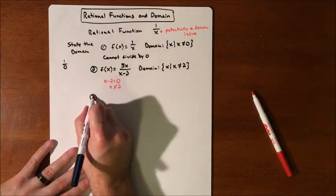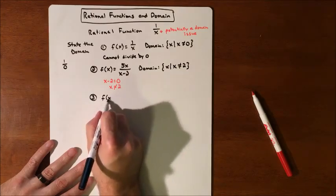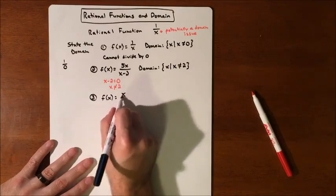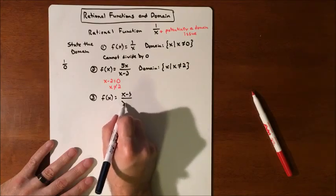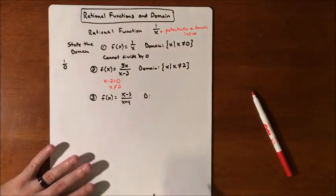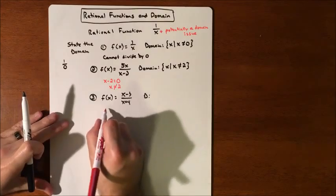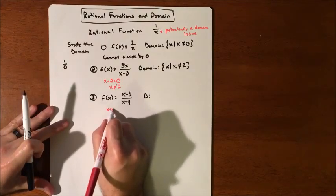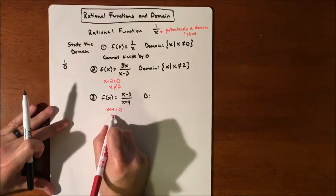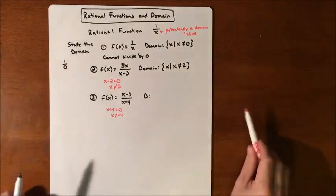All right, so let's do another one. If we have f of X equals X minus three over X plus four, I'm going to abbreviate domain with just a D. So what number causes a problem here? Again, if you can't see it, we'll just take the denominator, set it equal to zero, and solve. We'll bump the four over.